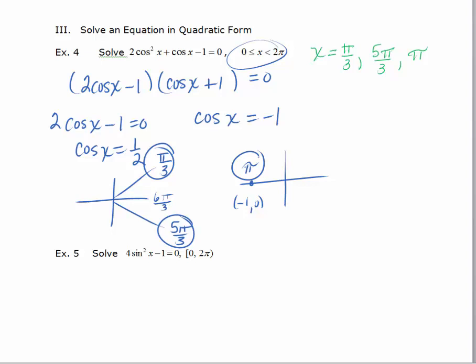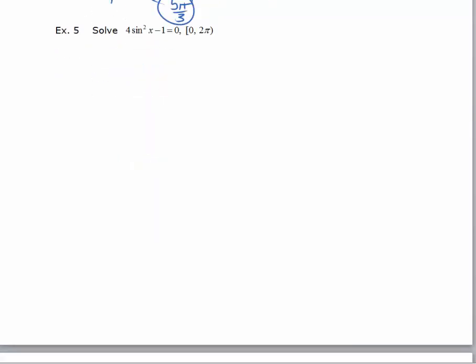The next equation is also in quadratic form, and it can be solved two ways. It can be solved by factoring, and it also can be solved by using the square root property. So I'll use the square root property first, but then caution you that when you use the square root property, it's extremely important that you remember to put the plus or minus in. Solving this equation for sine squared x, I get sine squared x equals 1 fourth by adding one to each side and dividing by four.